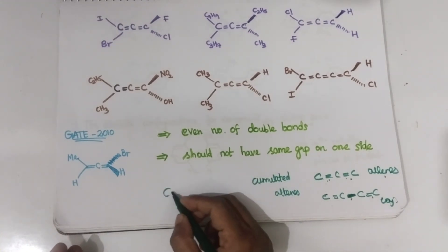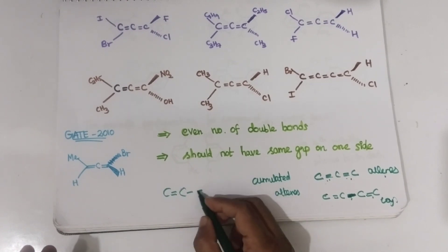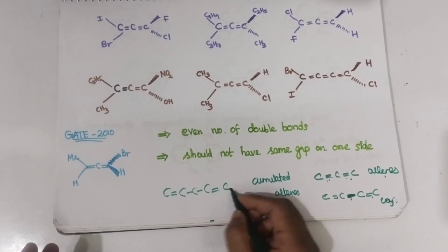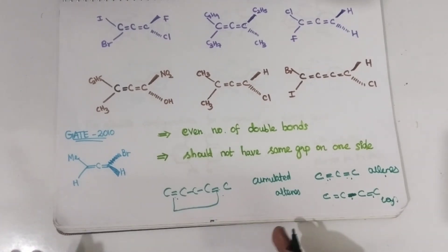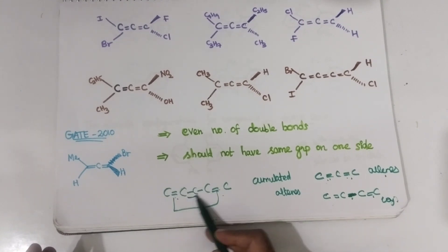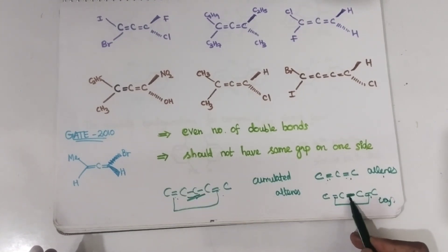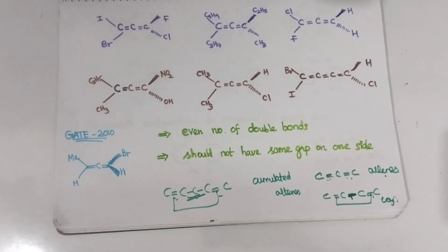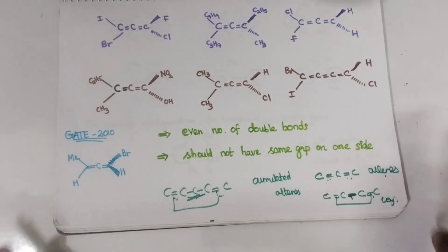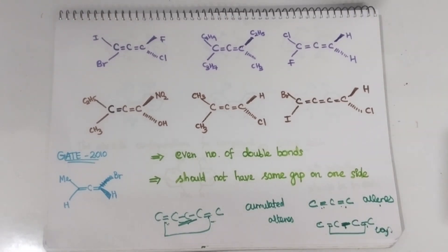If the double bond is present in one position and after two sigma bonds you have another double bond, these are isolated. If the two double bonds are separated by one sigma bond, it is known as conjugated diene. If separated by more than one sigma bond, it is known as isolated diene. These are all the classifications. Hence, these compounds are known as allenes because the double bonds are accumulated — they are present continuously.